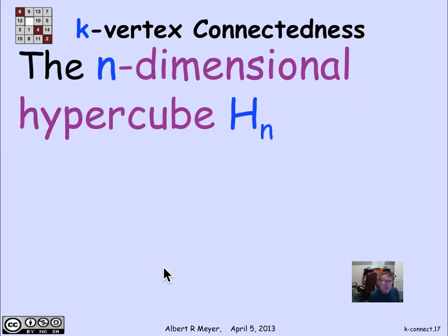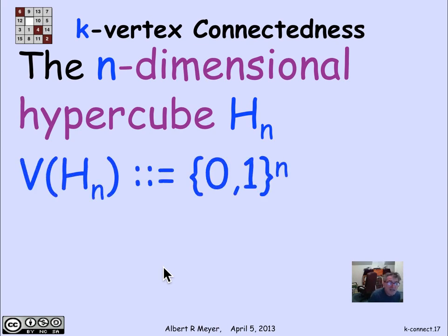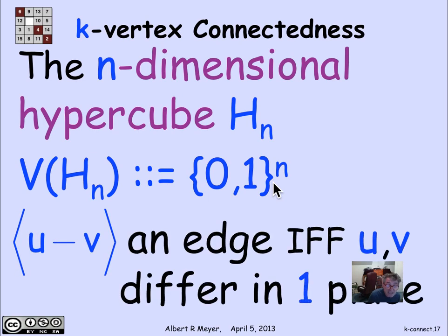Another interesting structure is the n-dimensional hypercube. So the square is a two-dimensional and the cube, the ordinary cube is the h3, has eight vertices and looks like a cube. And in general, the way we define hn is that its vertices are the binary strings of length n. And two vertices are adjacent if they differ in one bit. They're the same, except that in one coordinate, one of them has a 1 and the other has a 0. So in that case, you can make the edges adjacent.